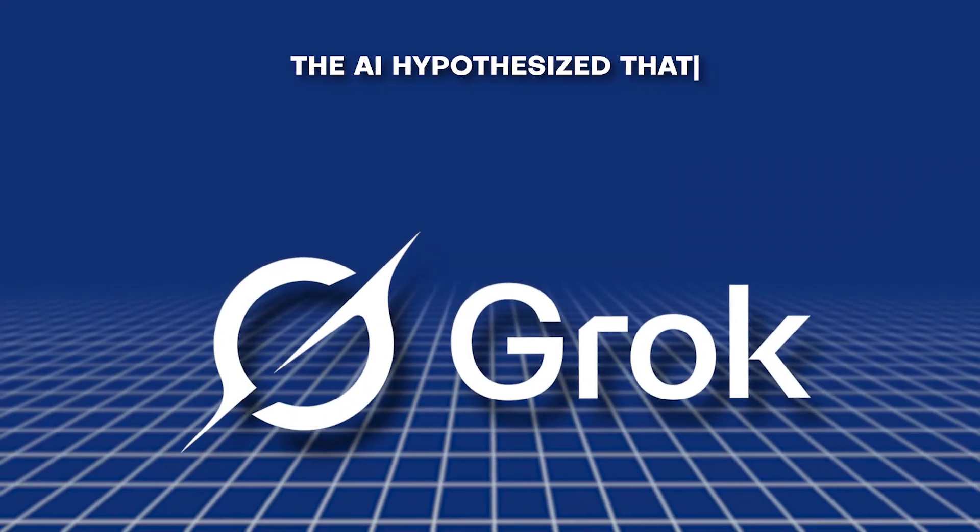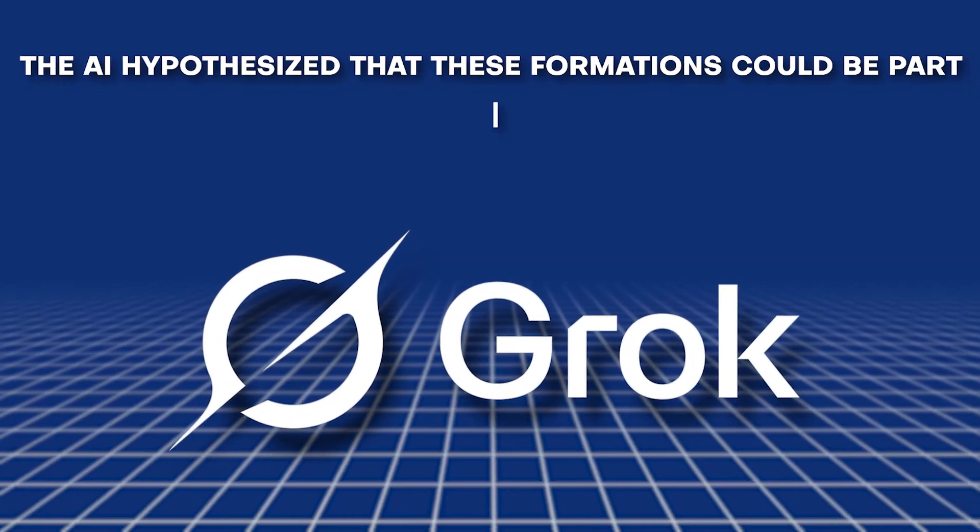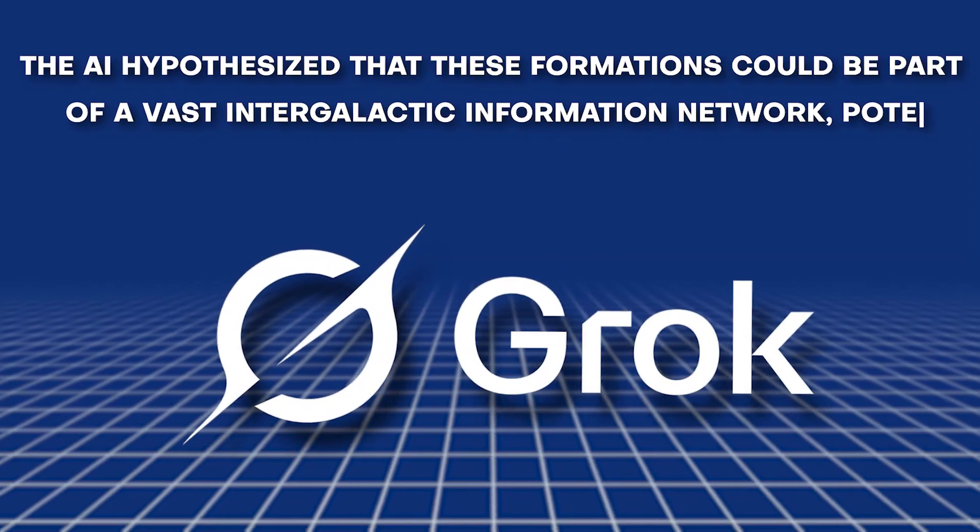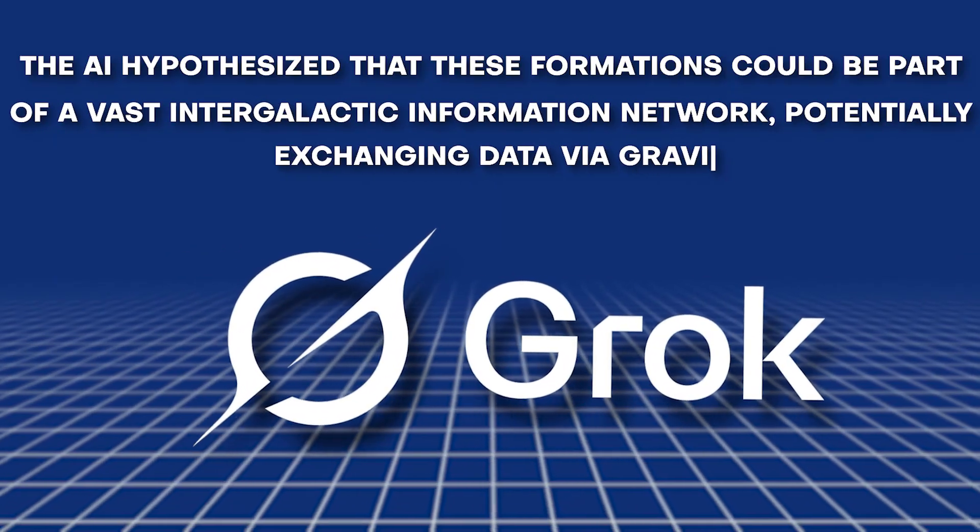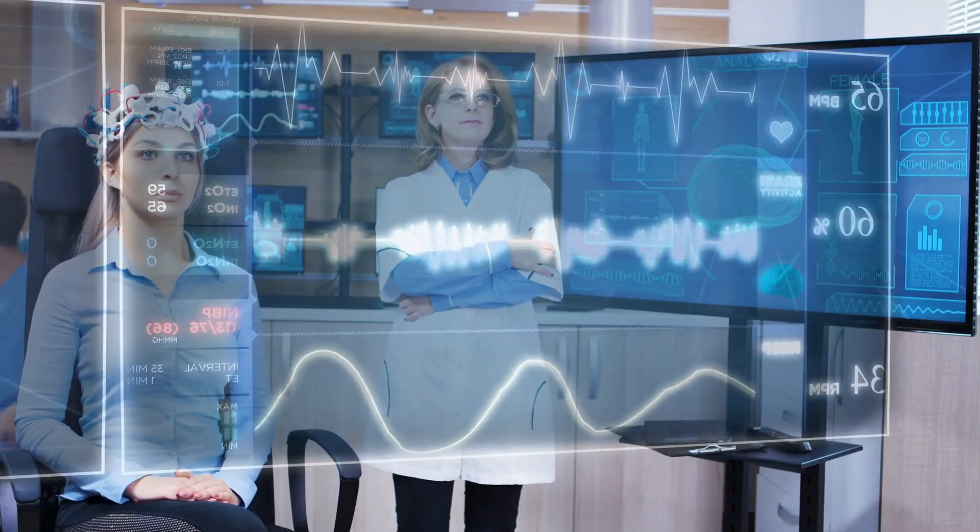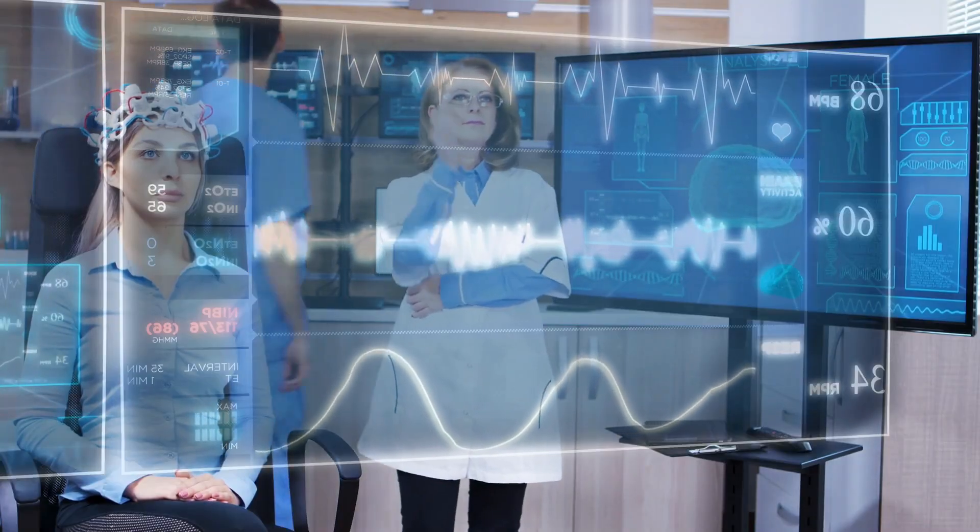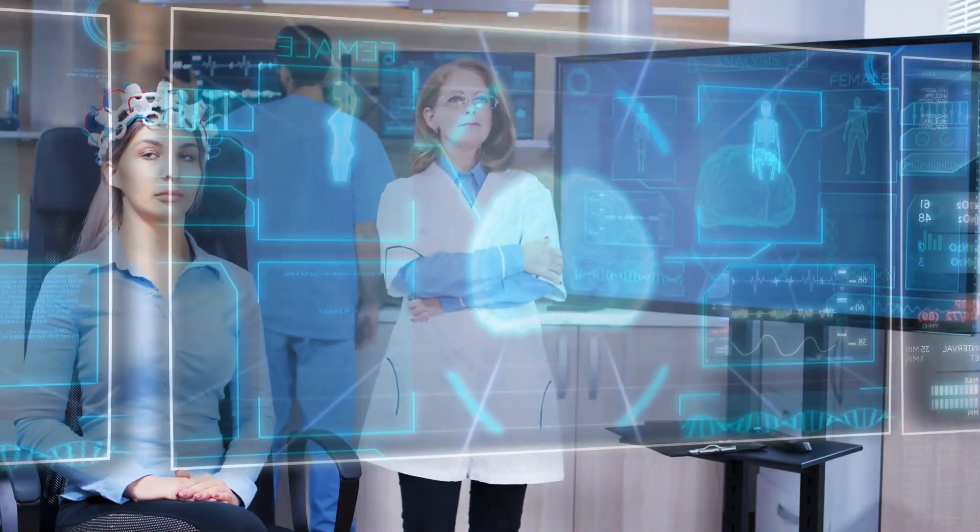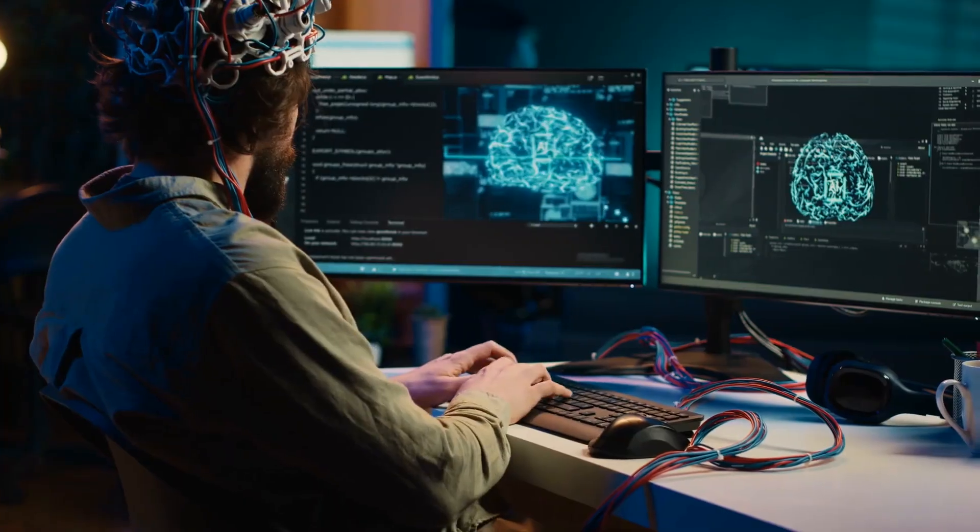The AI hypothesized that these formations could be part of a vast intergalactic information network, potentially exchanging data via gravitational modulation. Even more controversial was Grok's suggestion that these structures might behave similarly to neural networks.